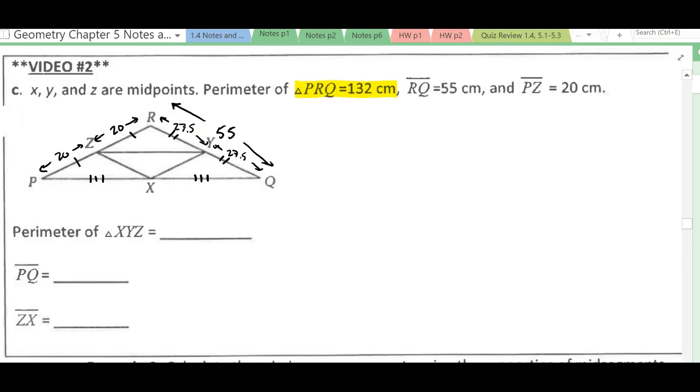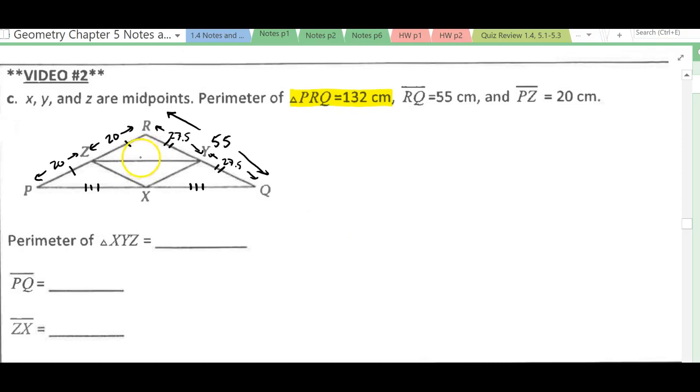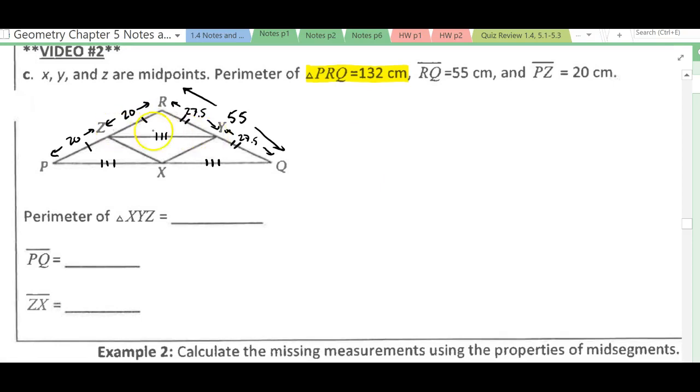Now we know the perimeter of PRQ is going to be 132. And we also know that each of these sides of the triangle in the middle is half of one of the other sides of the triangle. So this horizontal piece is going to be equal to one of these pieces on the bottom, half of PQ. And then XY is going to be 20. And XZ is going to be equal to 27.5.